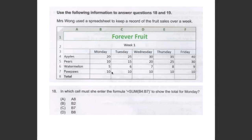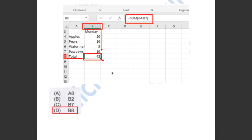This question asked us in which cell must Mrs Wong enter the formula =SUM(B4:B7) to show the total for Monday. As you can see in this spreadsheet, Mrs Wong has entered the total sum B4 to B7 in cell B8. So the answer has to be D, B8.